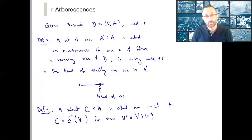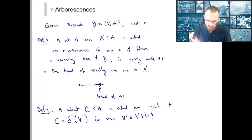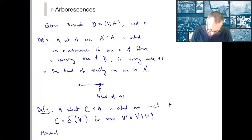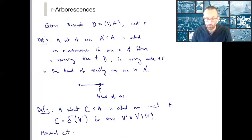A subset C for cut of the arcs A is called an R-cut, or a cut rooted at R, if C equals delta minus of V-dash for some subset V-dash of V excluding R. Remember that delta minus is the set of edges coming into a set of nodes, and delta plus would be the set of edges going out. So delta minus of a particular node would be all edges pointing to that node; delta plus of a single node would be all edges leaving that node. We can also define a minimal cut — the terminology is close to min cut, but we should not confuse this. A minimal cut is defined inclusion-wise.